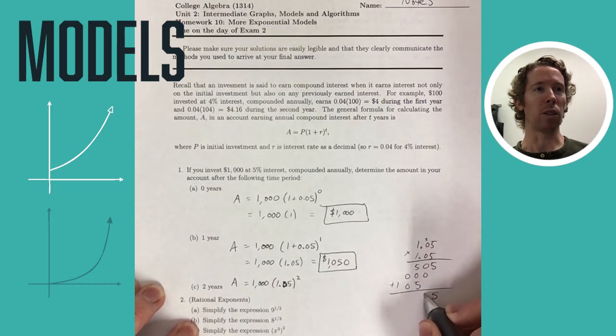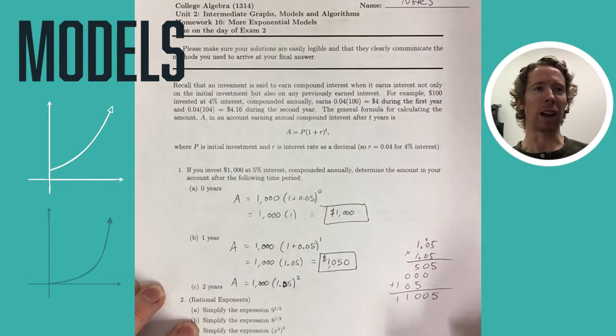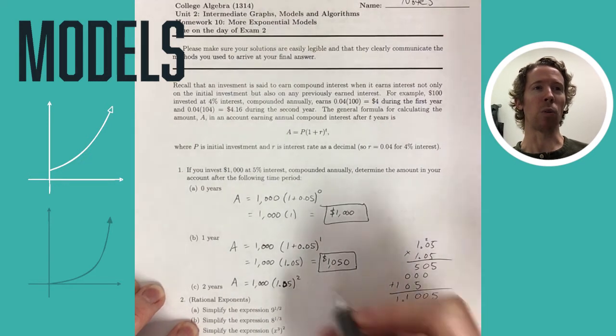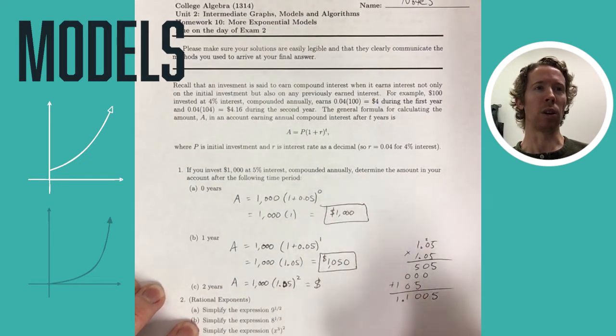I made a mistake here. When I did 5 times 5, I got 25. But I forgot to, when I added 2 plus 0 plus 0, I said that was 0. So this answer should say 1.1025.